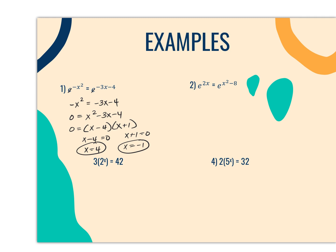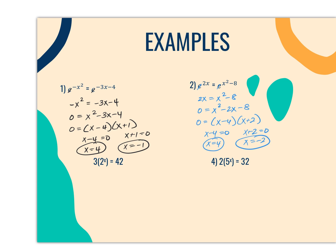In exponential functions, any solution you get is going to be acceptable. When we get to logarithmic functions, we'll have to check if one of the answers might be extraneous. Problem 2 follows the same pattern — both have base e, so we drop it out and get 2x = x² minus 8. Solving this quadratic: subtract 2x from both sides, then factor to get (x minus 4)(x plus 2), giving x = 4 and x = negative 2. These were quite simple since the bases were already the same.